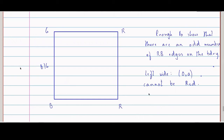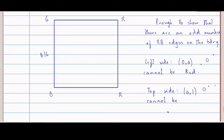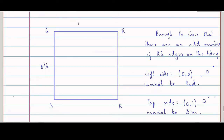What about on the top side? On the top side, the points look like (a, 1). The last coordinate is 1, which is at the top, so the last coordinate cannot be the first maximum. Therefore it cannot be blue. On the top edge, we only have red and green vertices.